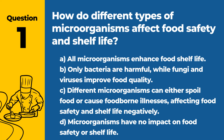Question 1. How do different types of microorganisms affect food safety and shelf life? a. All microorganisms enhance food shelf life. b. Only bacteria are harmful, while fungi and viruses improve food quality. c. Different microorganisms can either spoil food or cause foodborne illnesses, affecting food safety and shelf life negatively. d. Microorganisms have no impact on food safety or shelf life. Answer: c. Different microorganisms can either spoil food or cause foodborne illnesses, affecting food safety and shelf life negatively. Understanding the role of microorganisms is crucial for effective food safety management.